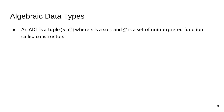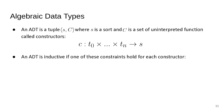Formally, we say that an ADT is a tuple where in the left compartment we have a sort symbol S, and in the right compartment we have a set of uninterpreted functions that we call constructors. Importantly, the output type of a constructor is exactly the same as the symbol S.